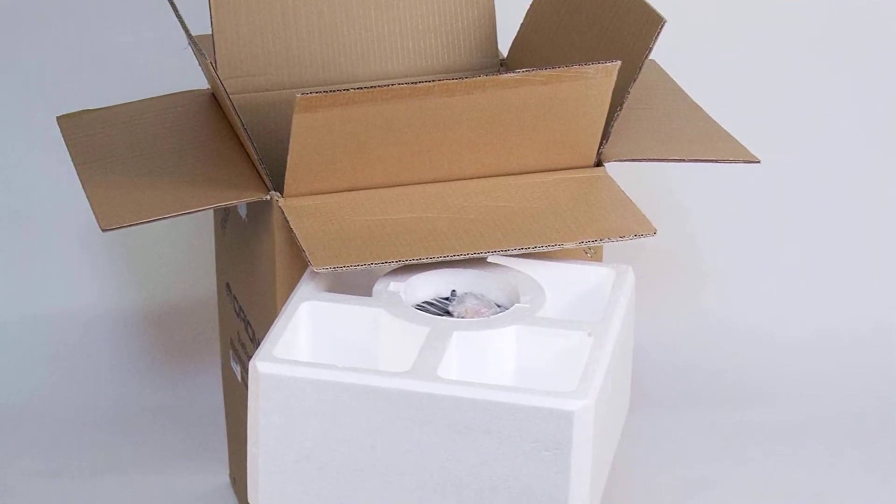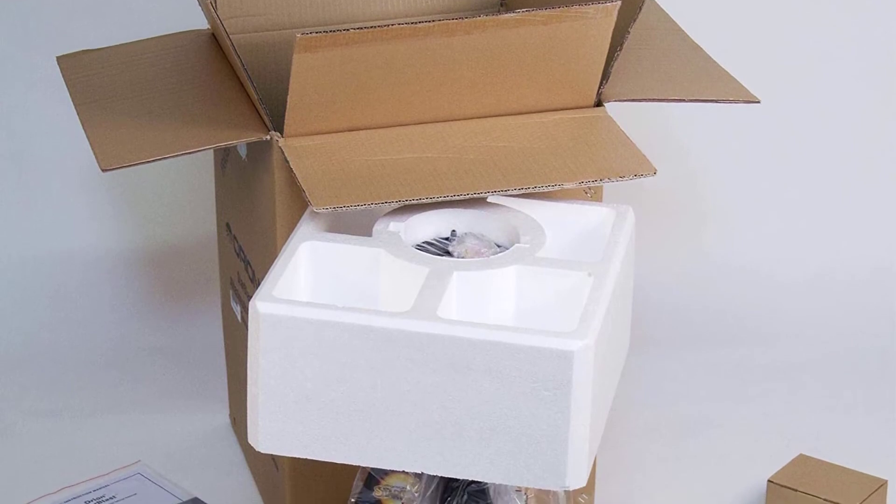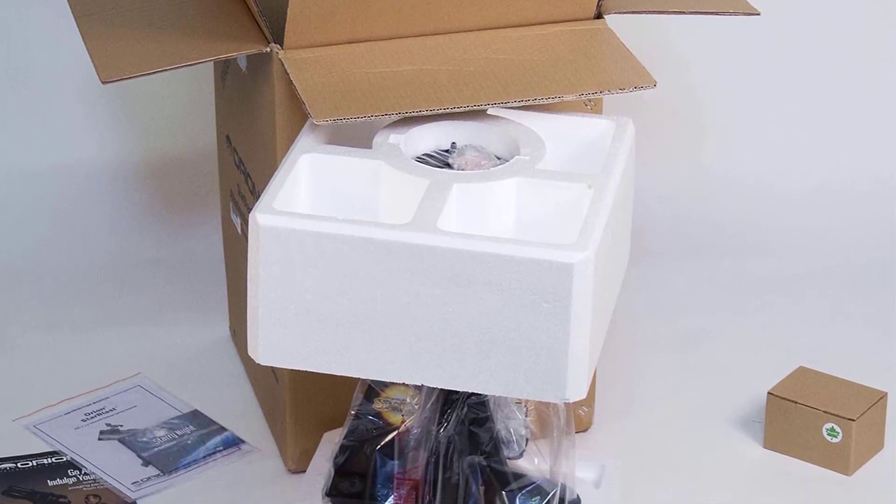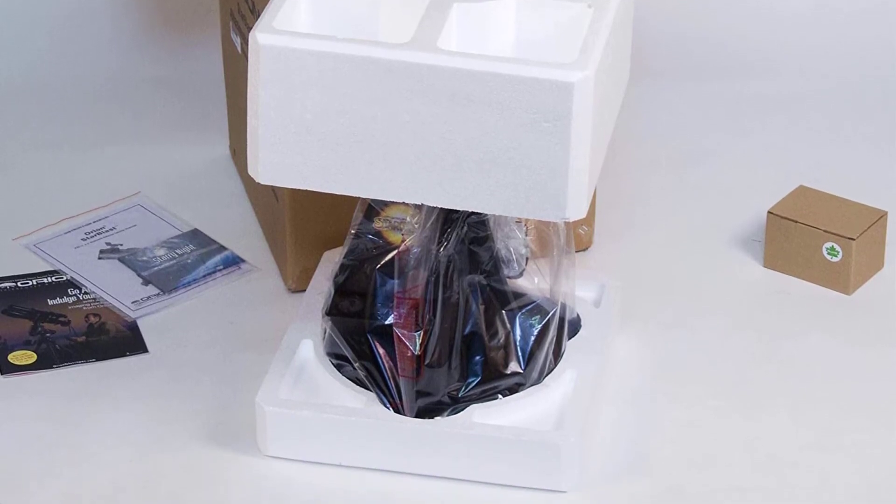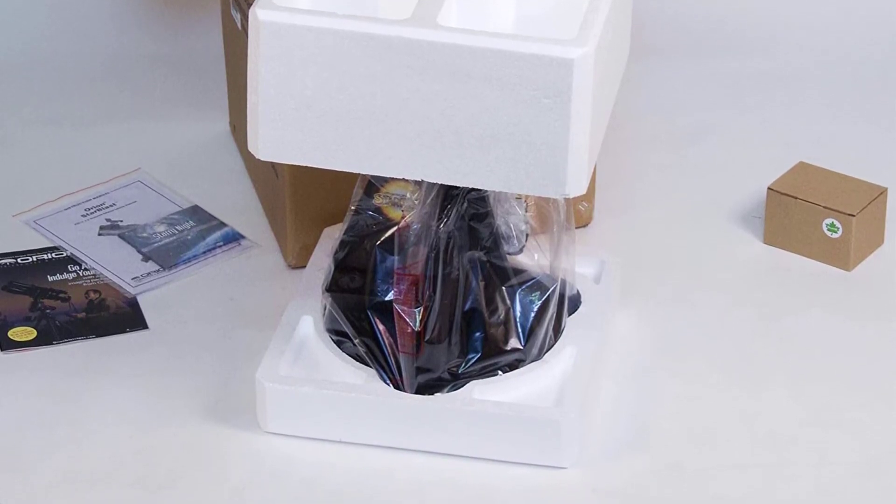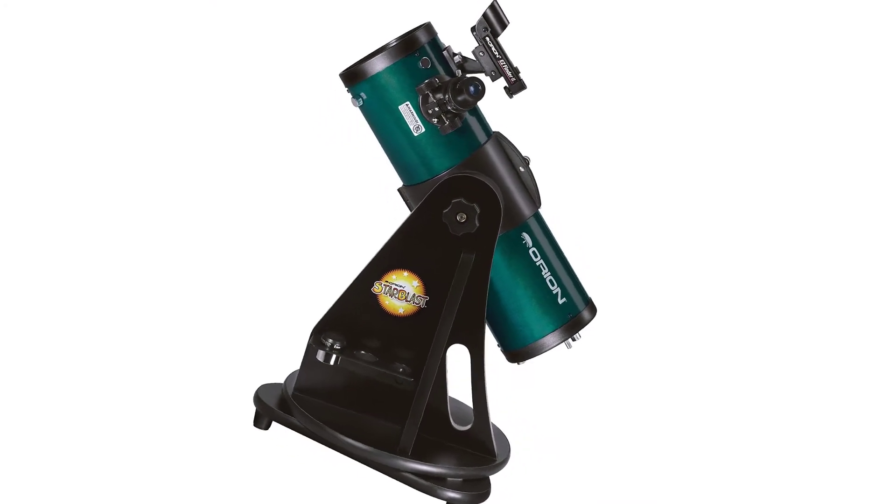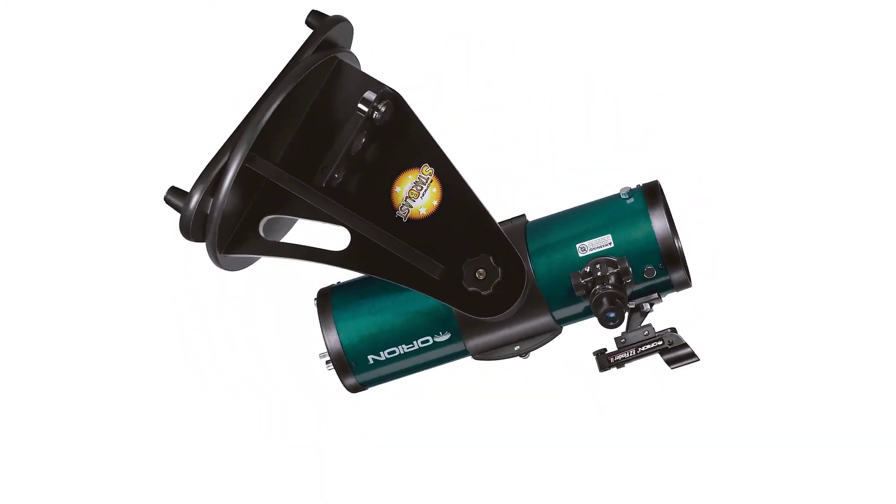Comes with two Explorer II 1.25-inch Kellner Telescope eyepieces, 17mm and 6mm, also includes EZ Finder II Reflex Sight, an eyepiece rack, a collimation cap and starry night astronomy software.